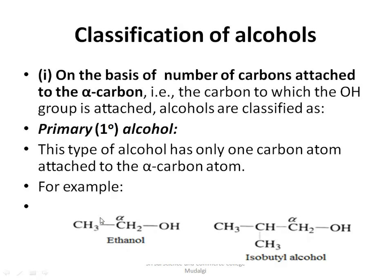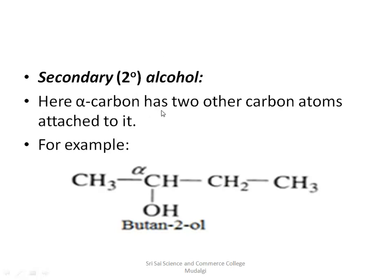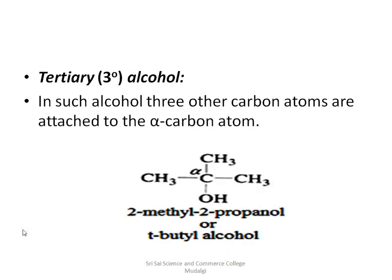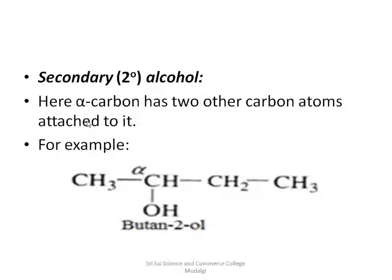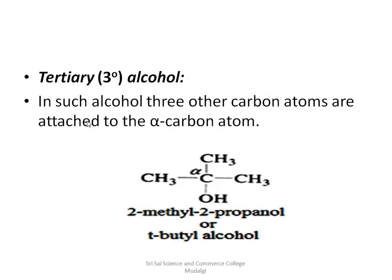The second type is secondary alcohol. In a secondary alcohol, the alpha carbon atom has two other carbon atoms attached to it. The OH group is attached to this carbon, making it the alpha carbon, and two carbon atoms are attached to it — hence it is a secondary alcohol. An example is butan-2-ol. The third type is tertiary alcohol, where the alpha carbon atom has three carbon atoms attached to it. A common example is 2-methyl-2-propanol, also called tertiary butyl alcohol.